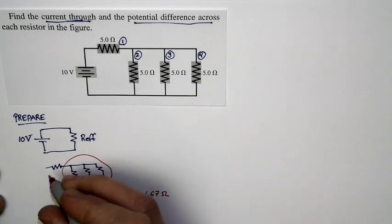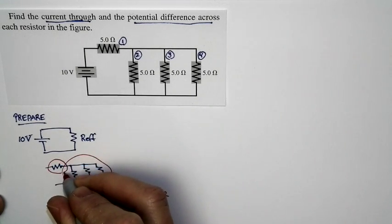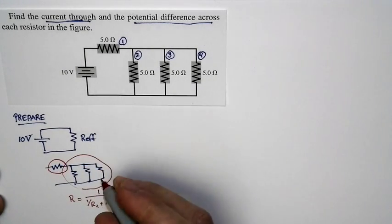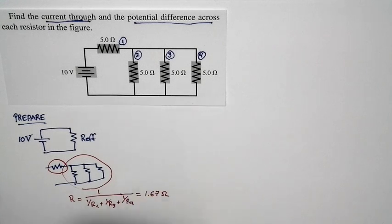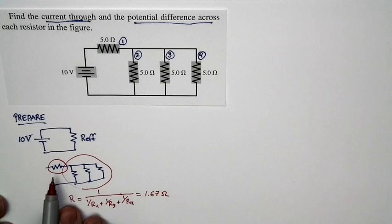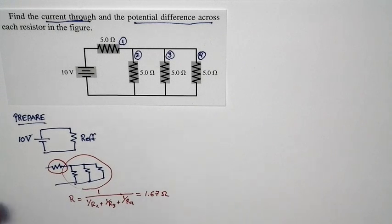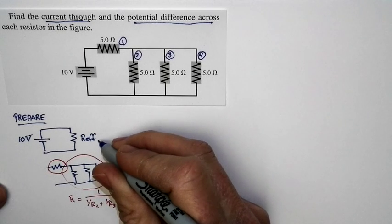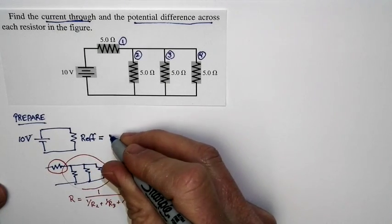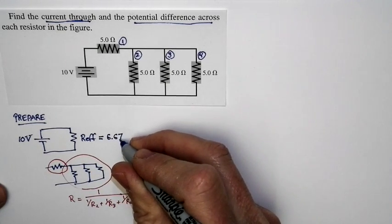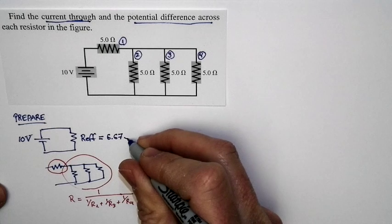This whole parallel resistance is in series with resistor R1, which is 5 ohms. So the resistance of the circuit as a whole is 5 ohms plus the resistance of the parallel combination, 1.67 ohms, giving us an effective resistance for the whole circuit of 6.67 ohms.